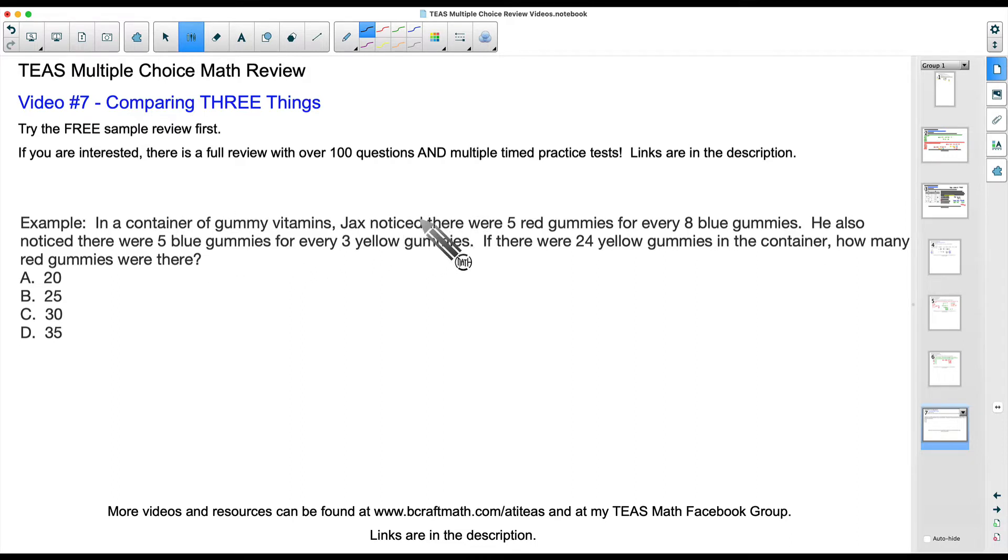In a container of gummy vitamins, Jack noticed there were five red gummies for every eight blue gummies. He also noticed there were five blue gummies for every three yellow gummies. If there were 24 yellow gummies in the container, how many red gummies were there? Three approaches here. The first approach I'm going to show you is the proportion approach. This technique will always work.